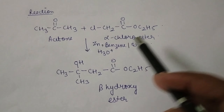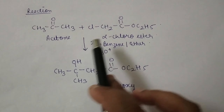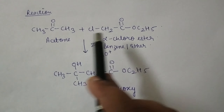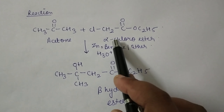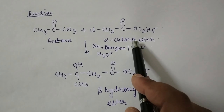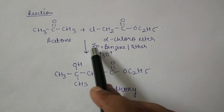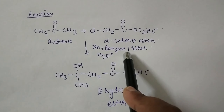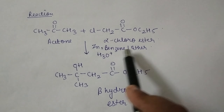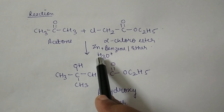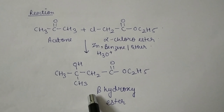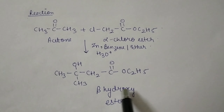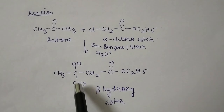This is the general reaction of Reformatsky. Acetone reacts with an alpha-chloro ester in the presence of zinc metal, benzene or ether, and hydronium ion to give the product beta-hydroxy ester.